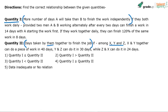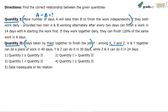Let's solve this. Quantity one: more number of days A will take than B to finish the work independently — basically we have to find A minus B, the difference. Quantity two is about days taken by them together to finish the job. So let's solve for quantity one first.